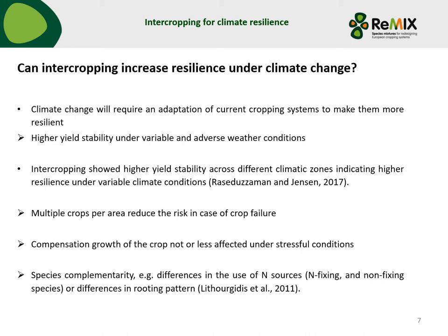In general, this compensation growth also depends strongly on species complementarity. That means, for example, differences in the use of nitrogen sources like a nitrogen-fixing species and a non-fixing species, or also differences in rooting pattern, which allow better exploration of the soil to extract water.